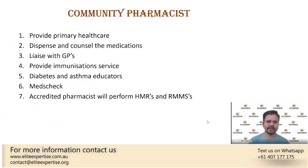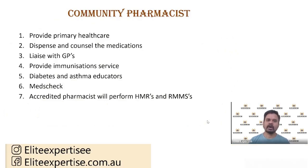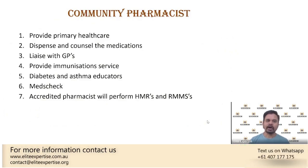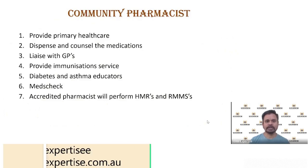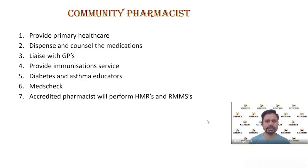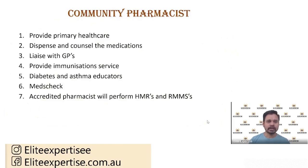Community pharmacists are the first-line pharmacists — they dispense and counsel medications. When a patient sees the doctor and gets a prescription, they go to the community pharmacy to get it filled. The pharmacist not only dispenses the medication but also identifies any interventions — if there are errors in the prescription, they contact the GP immediately, and can refuse to fill the script until it's corrected, avoiding medication-related errors.